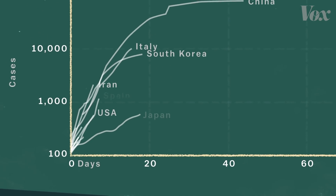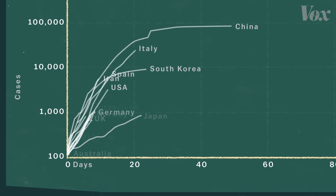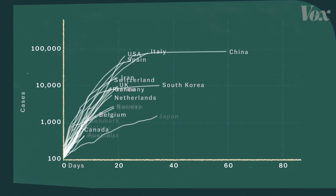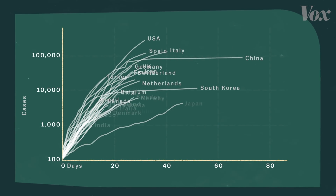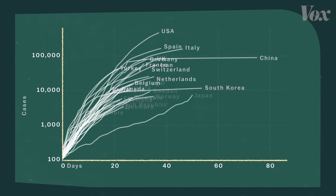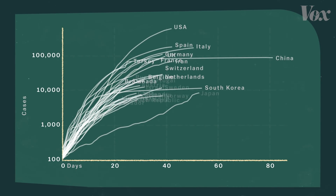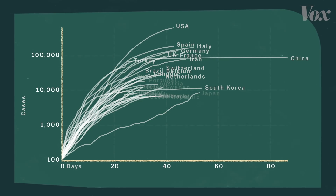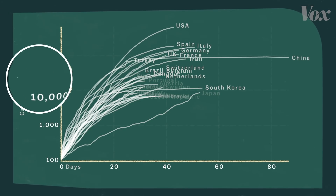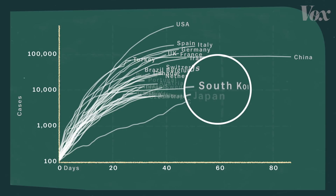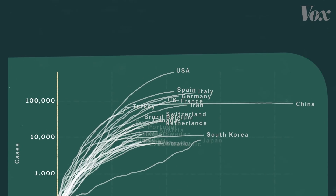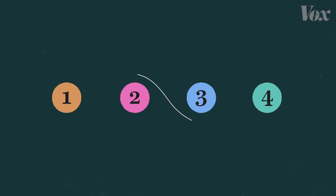You may have seen this chart since the start of the coronavirus pandemic. In one image, it appears to capture the state of each nation's battle in the global war against the virus. But like all data visualizations, its design tends to emphasize some things and hide others. So here are four things we need to know to understand this chart.